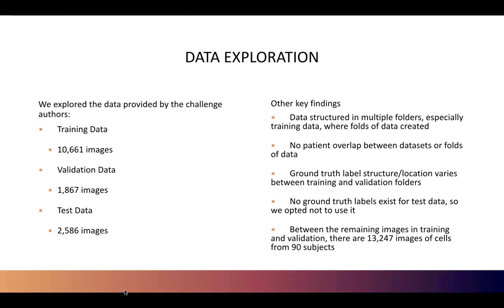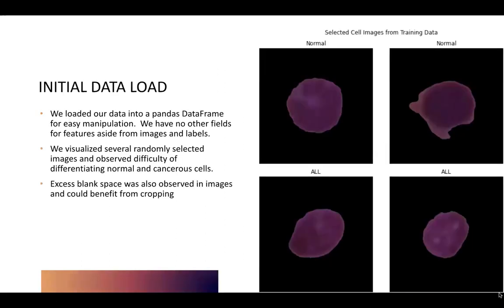Between the remaining training and validation images, there are 13,247 images of cells from 90 subjects. Our only input data for our models are the images themselves and the labels assigned by an expert. Initially, we loaded our data into a pandas data frame for easy manipulation. On the right, you can see several randomly selected images visualized. This highlights the difficulty in differentiating normal and cancerous cells. We also noted excess blank space in the images that could benefit from cropping.